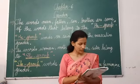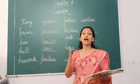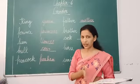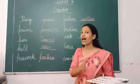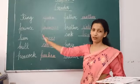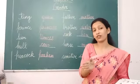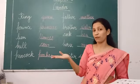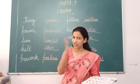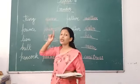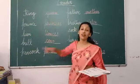So now please follow your books. You can see a few masculine words are given there but feminine words are not given. I have written those feminine words in front of masculine words. King is a masculine gender but queen is a feminine gender. King is masculine and queen is feminine.